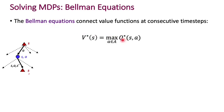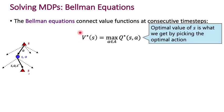For the optimal policy, the state value function and action value function are related as follows: the maximum over all actions of Q*(s, a) is exactly V*(s). Because V* is the optimal expected return and Q* is the optimal expected return after executing action a. If action a were optimal, the optimal expected return would equal that maximum. So the optimal value of s is what we get by picking the optimal action.